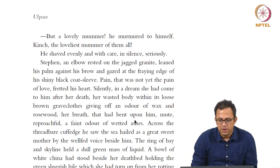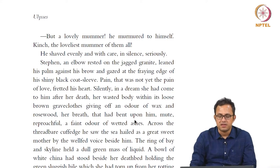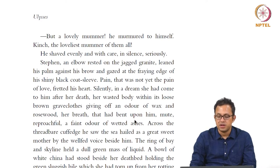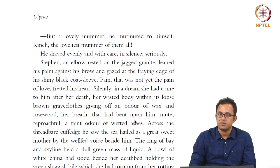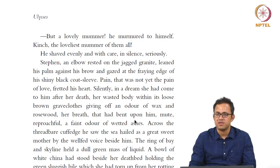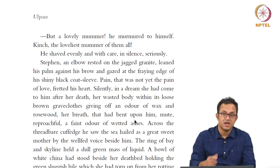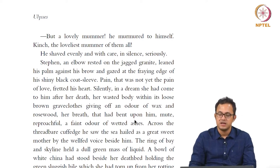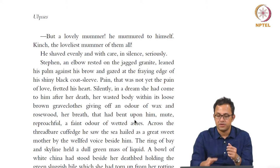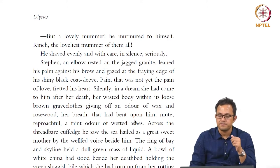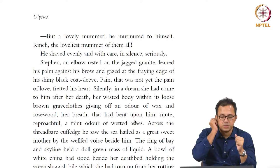"Stephen, an elbow rested on the jagged granite, leaned his palm against his brow, and gazed at the fraying edge of his shiny black cord sleeve. Pain — there was not yet the pain of love — fretted his heart. Silently, in a dream, she had come to him after her death." The posthumous appearance of the mother becomes important — it is a symbolic reminder of Stephen's recursive guilt. She keeps coming back in his dreams as a ghostly, spectral character, long since dead, informing his guilt and trauma even more.